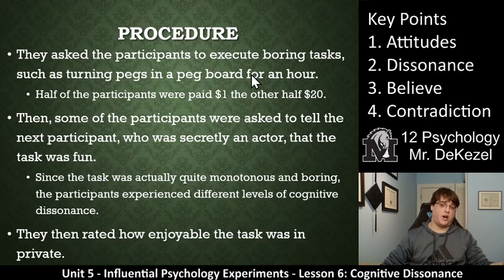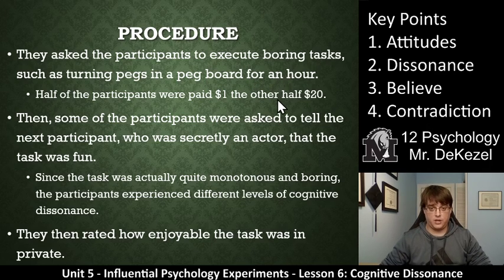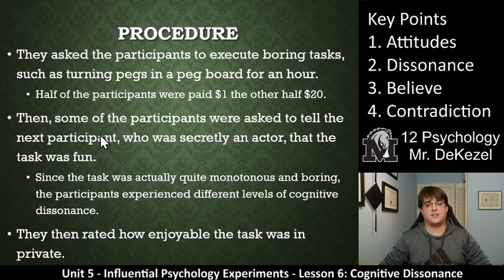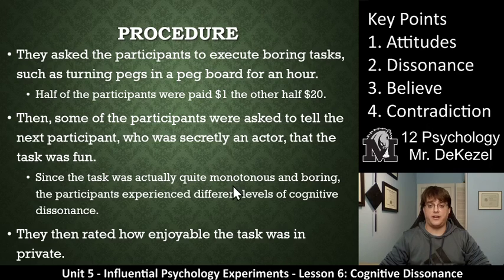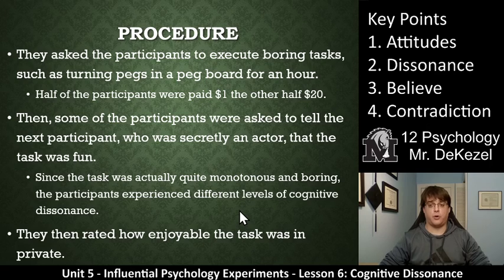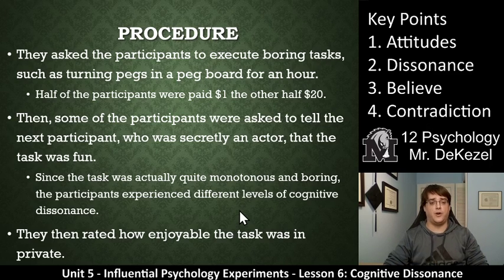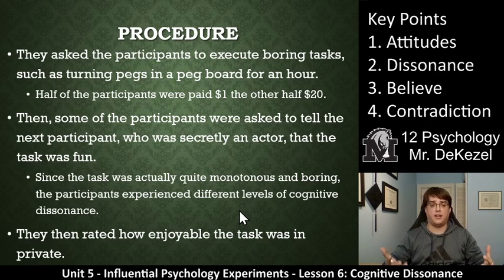Half the participants were paid a dollar, and half the participants were paid $20, so there are two separate groups. Then some of the participants were asked to tell the next participant — who was secretly an actor — that the task was fun. Now, this is objectively a lie. Since the task was quite monotonous and boring, the participants experienced different levels of cognitive dissonance. The task was actually boring, but what they had to tell someone was that it was actually fun, and that created dissonance — their beliefs and their actions did not line up.